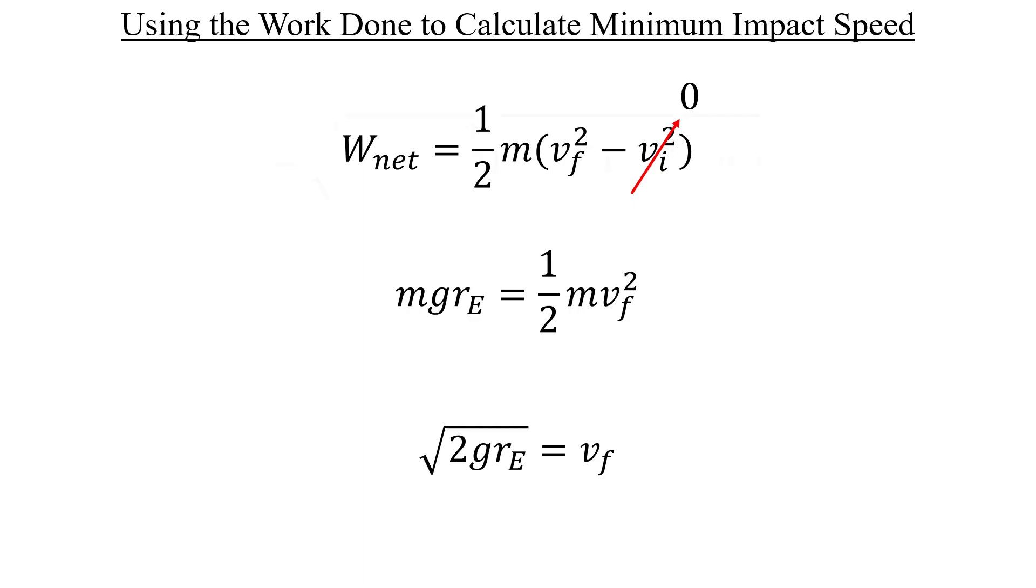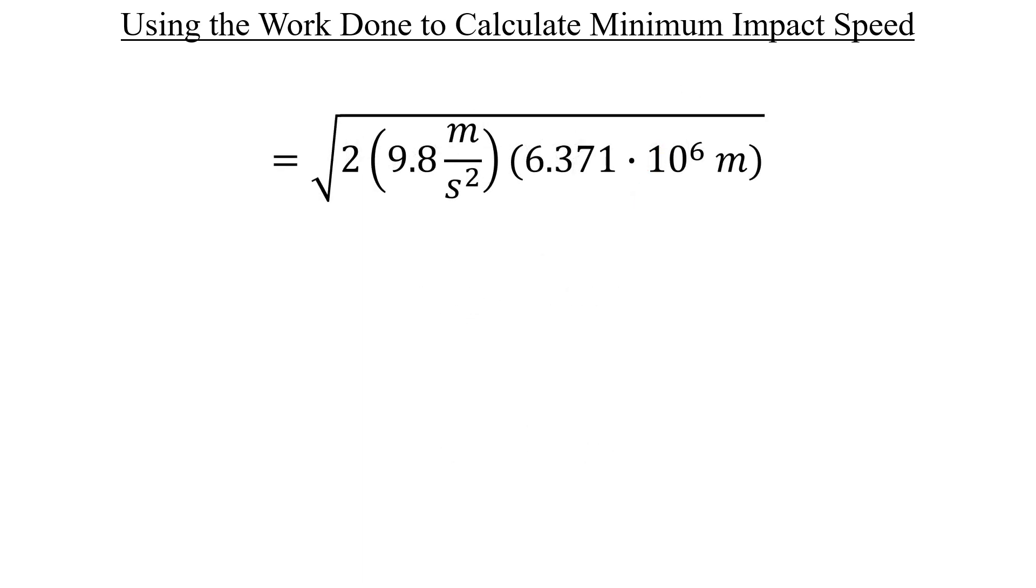Go ahead and plug in the numbers, and you should get a value similar to this on your calculator. The smallest number of significant figures in our multiplication here is 2 within this 9.8 chunk for gravity, or the acceleration due to gravity, excuse me. So we'll have to chop our answer down to 2 significant figures, which reduces to 11,000 meters per second. And so this portion is now done.